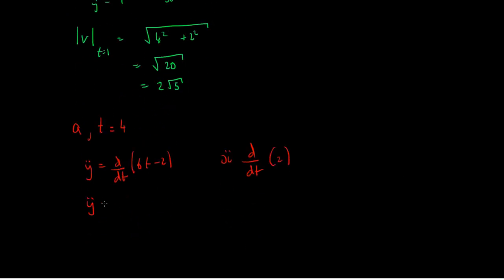So we end up with y-double-dot being the derivative of this, which is just 6, and x-double-dot being 0.